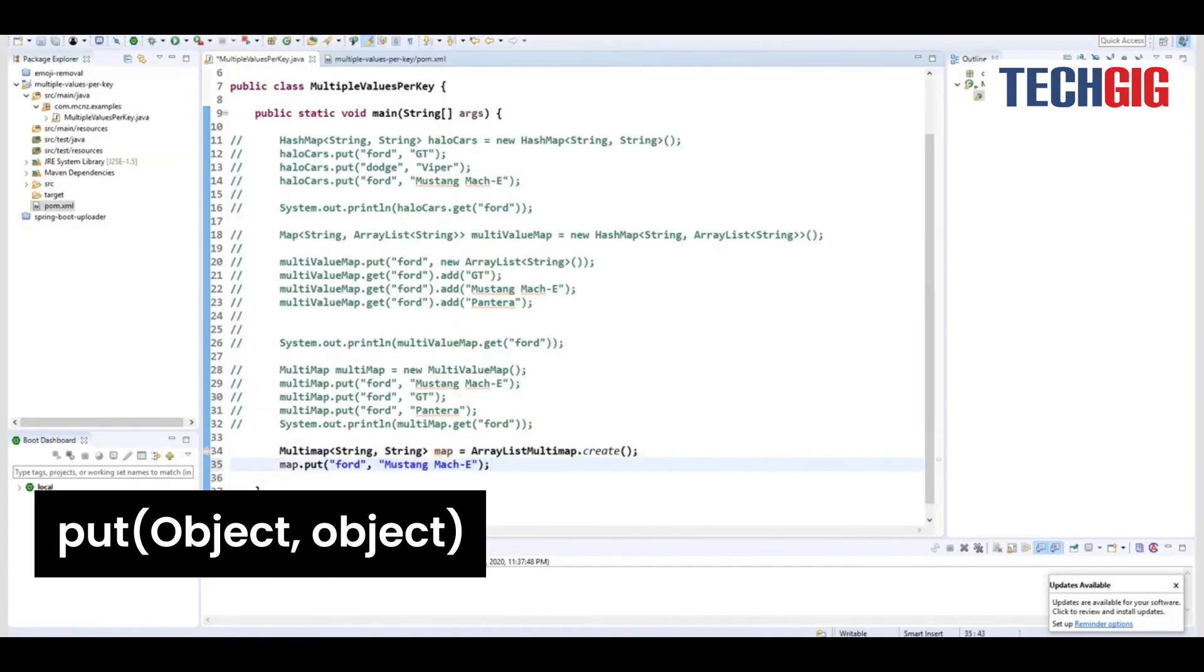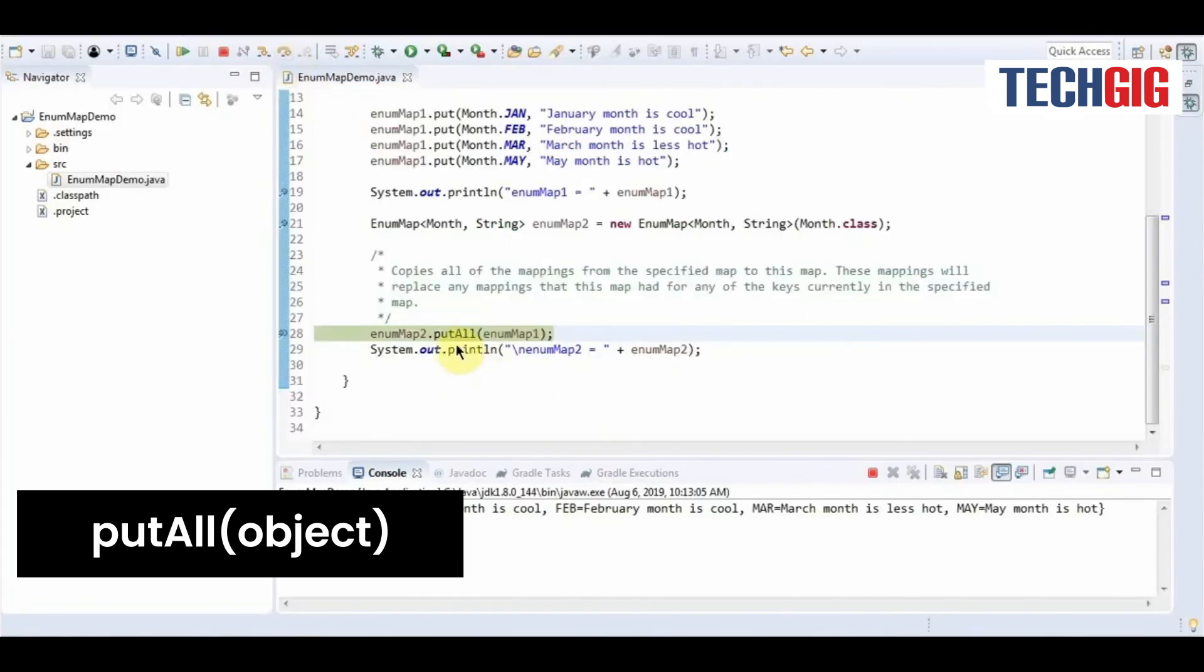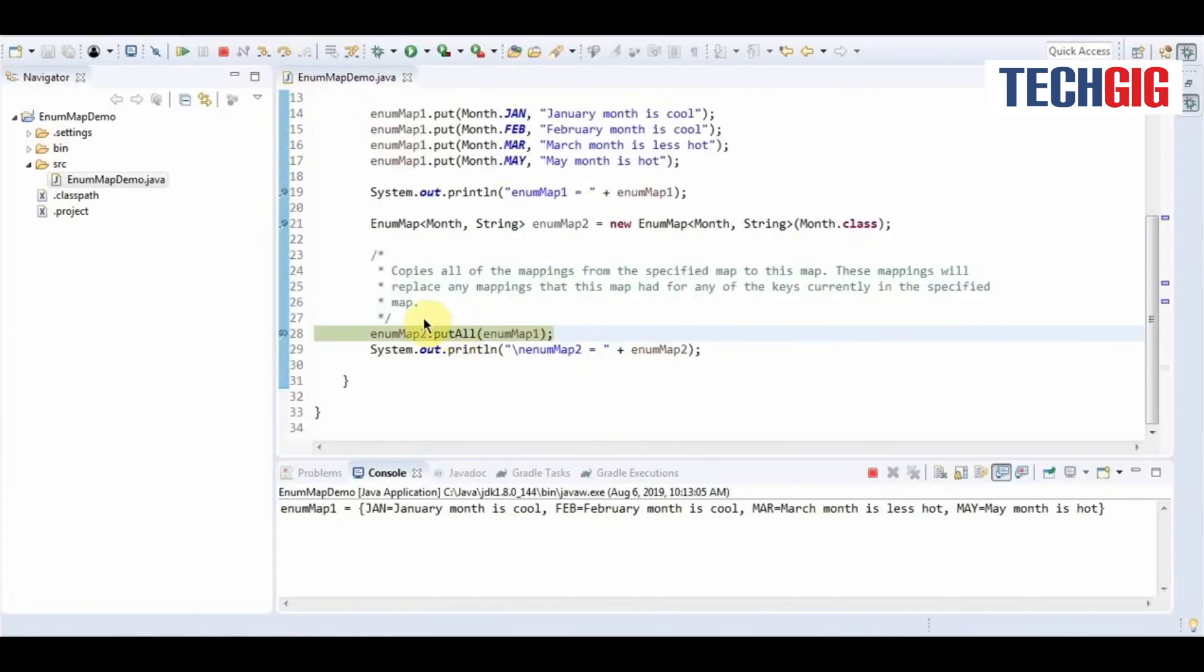Put is used to associate a value with a key. PutAll copies all of the mappings from the provided map to this map. IsEmpty checks to see if the given string is empty.